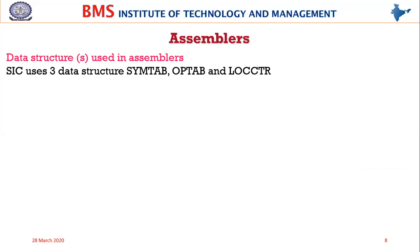Three data structures are used in assemblers: the symbol table (SYMTAB), the opcode table (OPTAB), and a location counter (LOCCTR). These three data structures are important for building the two-pass assembler, which we will discuss in the next class.